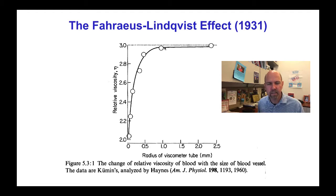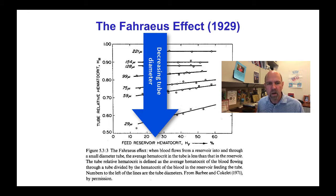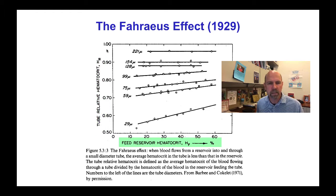It turns out that this observation is explained by the original observation that Fåhræus made in 1929 of the effect of tube diameter on the relative hematocrit. The relative hematocrit here is the ratio of the hematocrit measured of blood flowing in the thin tube divided by the hematocrit of the blood in the reservoir that supplied the tube.